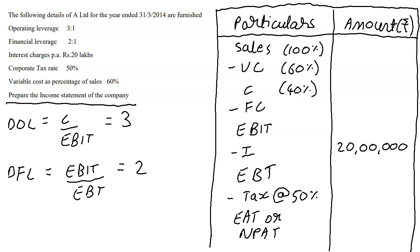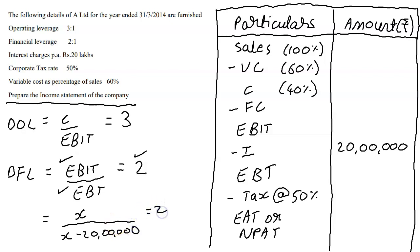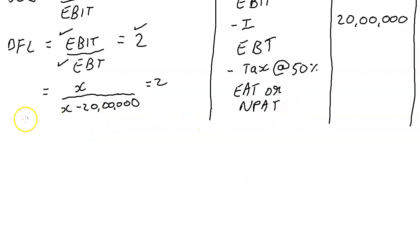We need to solve this like a jigsaw puzzle. We don't know EBIT directly, but if we take EBIT as x, then EBT = x − 20 lakhs. Since DFL = EBIT / EBT = 2, we can write the equation: x / (x − 20 lakhs) = 2.